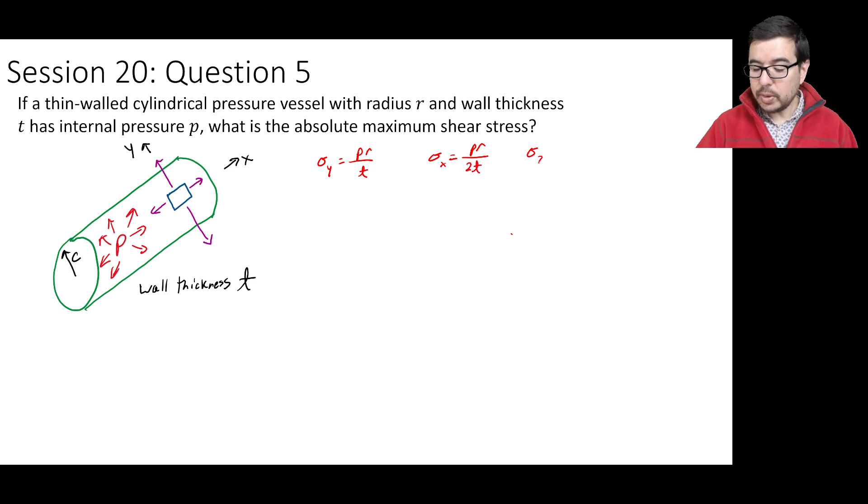Sigma z is going to be 0, and we've talked about why that is in the past. It has to do with a small thickness and the fact that r over t is also large. So whatever stress we would have in this direction, which might be something equal to or less than the internal pressure acting in the radial direction through the element, is going to be much, much less than what you have with the sigma x and the sigma y, as we've calculated here.